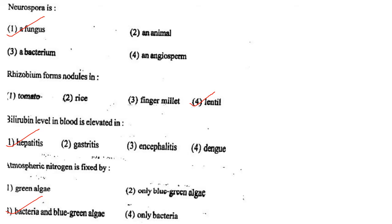Next one: Atmospheric nitrogen is fixed by option 1, algae; option 2, only blue-green algae; option 3, bacteria and blue-green algae; option 4, only bacteria. Answer is option 3: bacteria and blue-green algae.